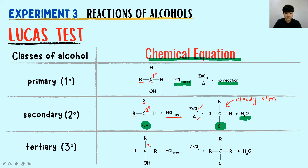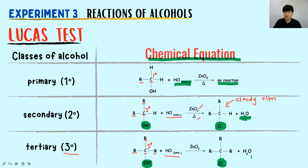For tertiary alcohol, the carbon holding OH is a tertiary carbon because it holds three R groups (three carbon groups). The chemical equation is similar: OH is substituted by Cl, forming H₂O as a by-product. That is how we write the chemical equation for the Lucas test.